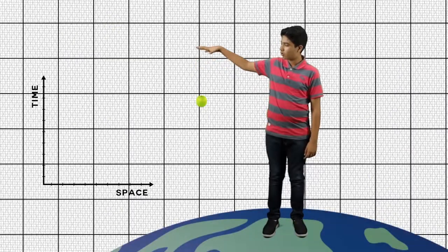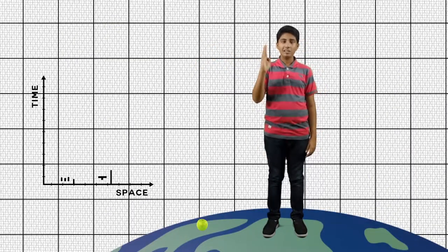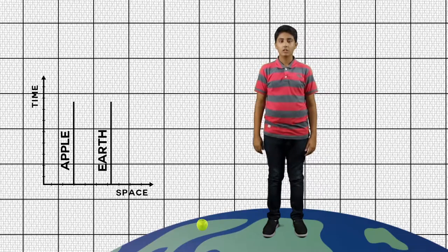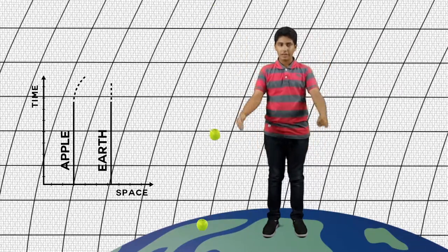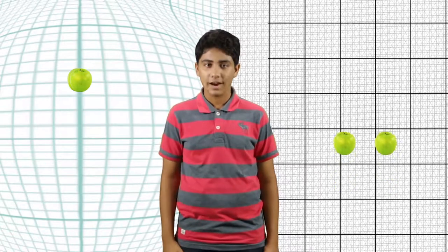So why does an apple fall on earth? It has a straight trajectory through space-time but since space-time is curved, the straight line trajectory of the apple meets that of earth. This is what we really mean by gravity. The curvature of space-time which causes two objects to meet which otherwise would not have met in flat space-time.